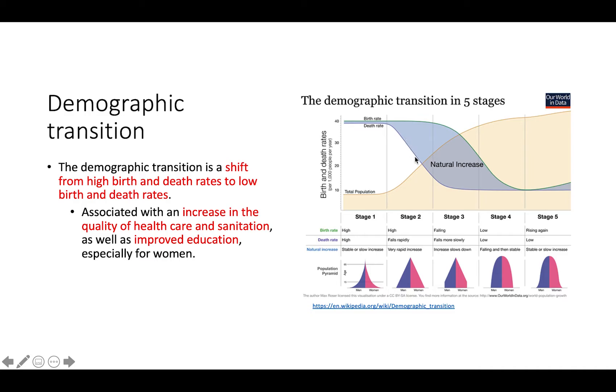The death rate typically begins to fall before the birth rate because of an increase in the quality of health care and sanitation. As well as improved education, especially for women. Later on, once we get further into the demographic transition, we start to see more family planning, more women having careers, and they're having children at later points in their life as well as fewer children. Then we start to see the birth rate fall and end up in this area with very low levels of overall population growth.